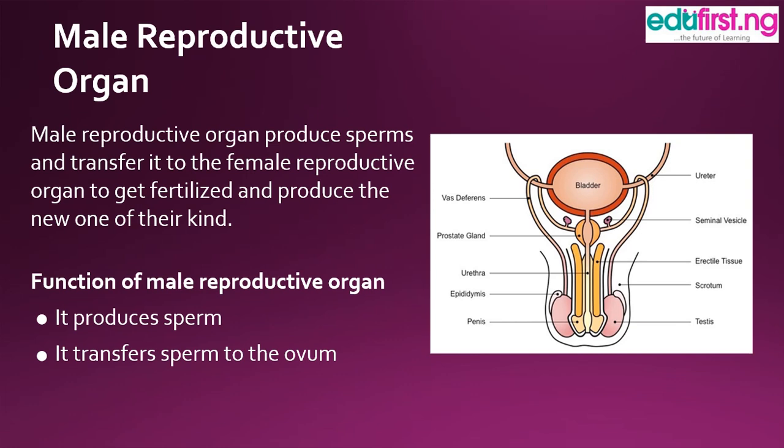Function of male reproductive organ. One, it produces sperm. Two, it transfers sperm to the womb. The womb is part of the female reproductive organ, where sperm is transferred, fertilized, and reproduced to another kind of that person.